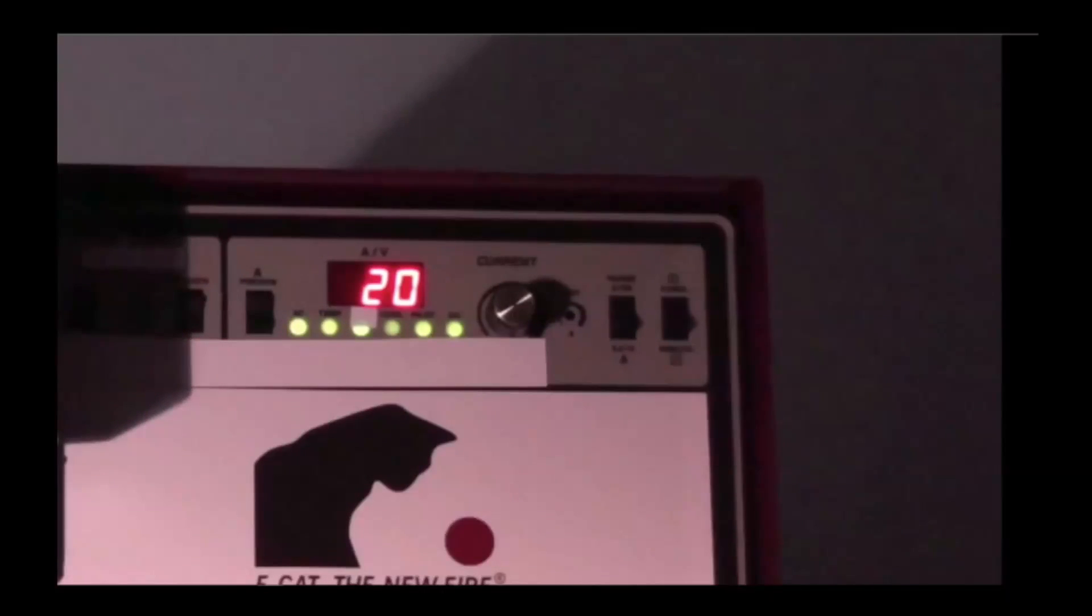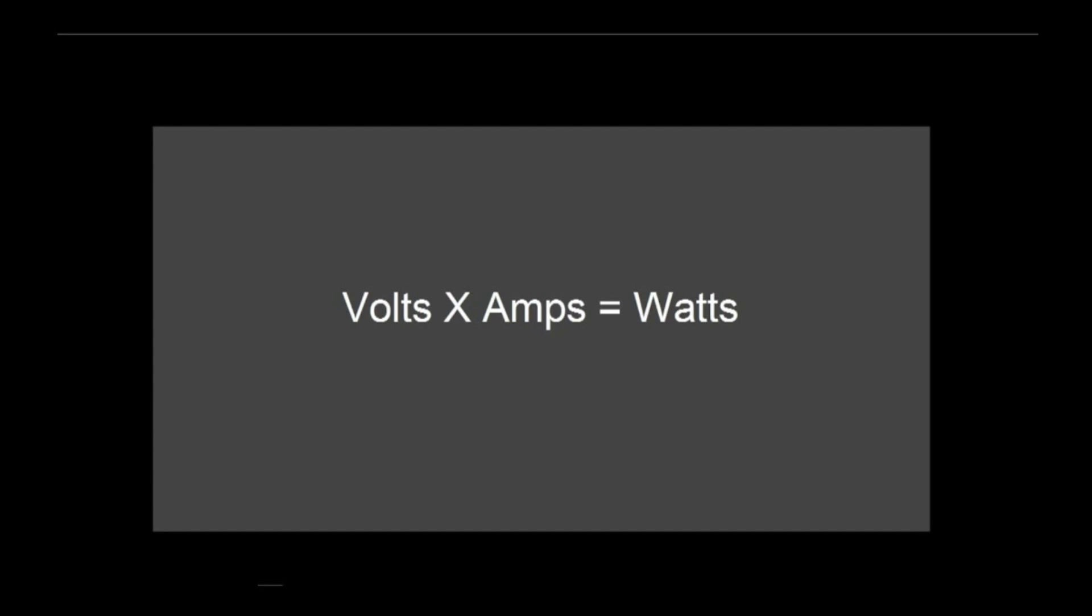Before, we have read 20 amps. From the well-known ohms equation, we know that watts equals volts times amps. Therefore, we have 19 volts times 20 amps. That makes 380 watts.